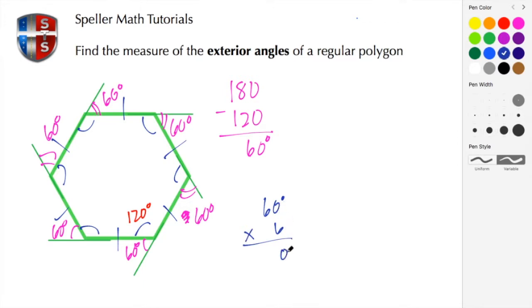Well, 6 times 0 is 0, and 6 times 6 is 36, so we get 360. Well, this leads us into method number 2.